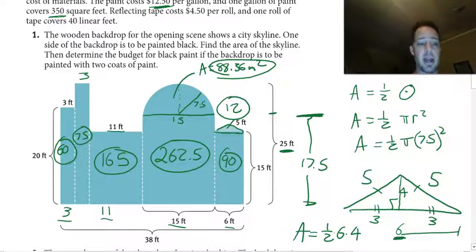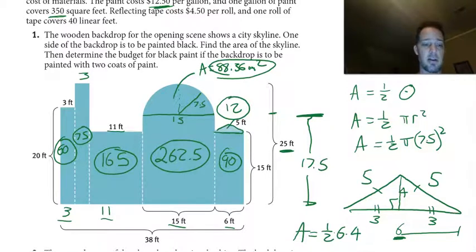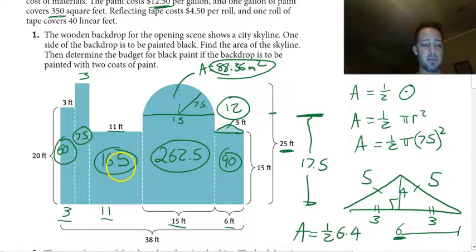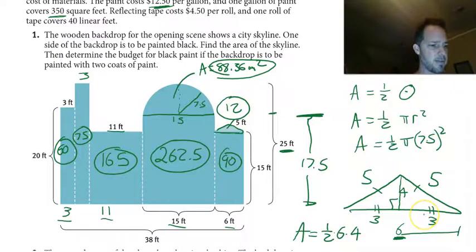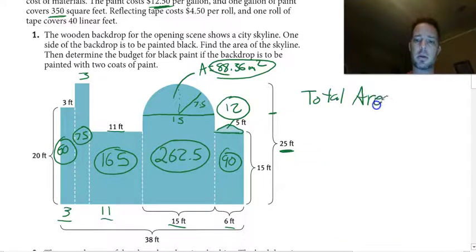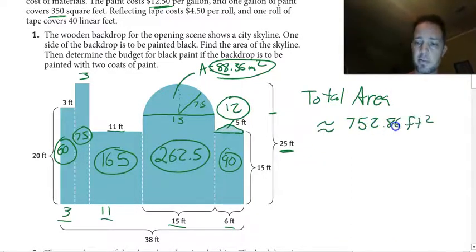Now we add up all the areas to find the total area of the skyline. Adding everything in the calculator gives us 752.86 total square feet.